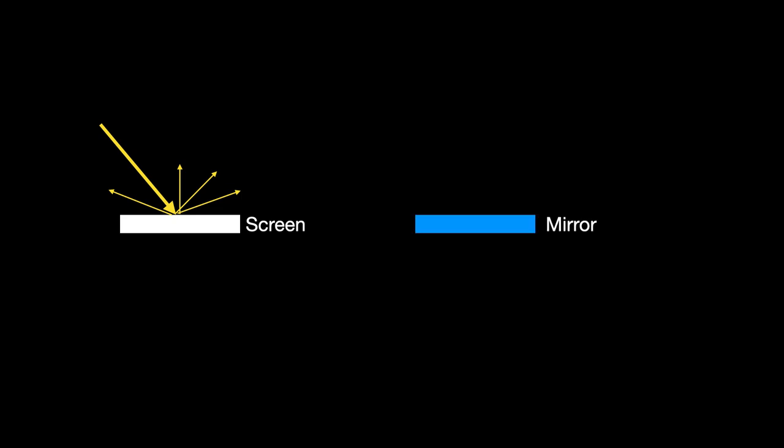Now if I take a mirror and I take light hitting it, it reflects off in one direction. This is the law of reflection, equal in opposite angles. No, the angle of incidence is equal to the angle of reflection. So it's really bright in that direction but it has no light coming back in the other directions.